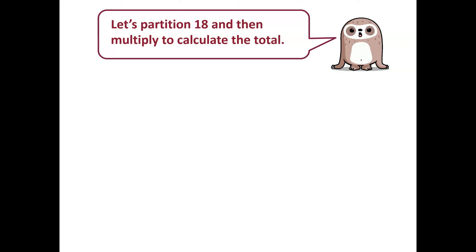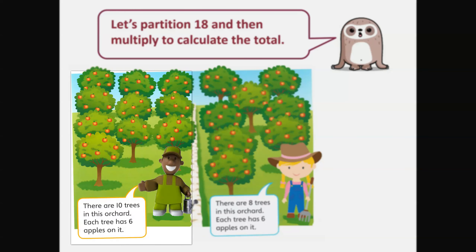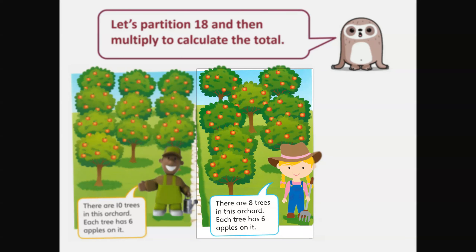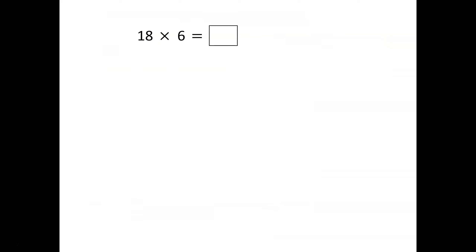We can partition eighteen into tens and ones values. His friends are showing us how — there are ten trees in the orchard, each with six apples on it. Let's have a look at our calculation: eighteen multiplied by six. Here are six ones and I need eighteen lots of them.